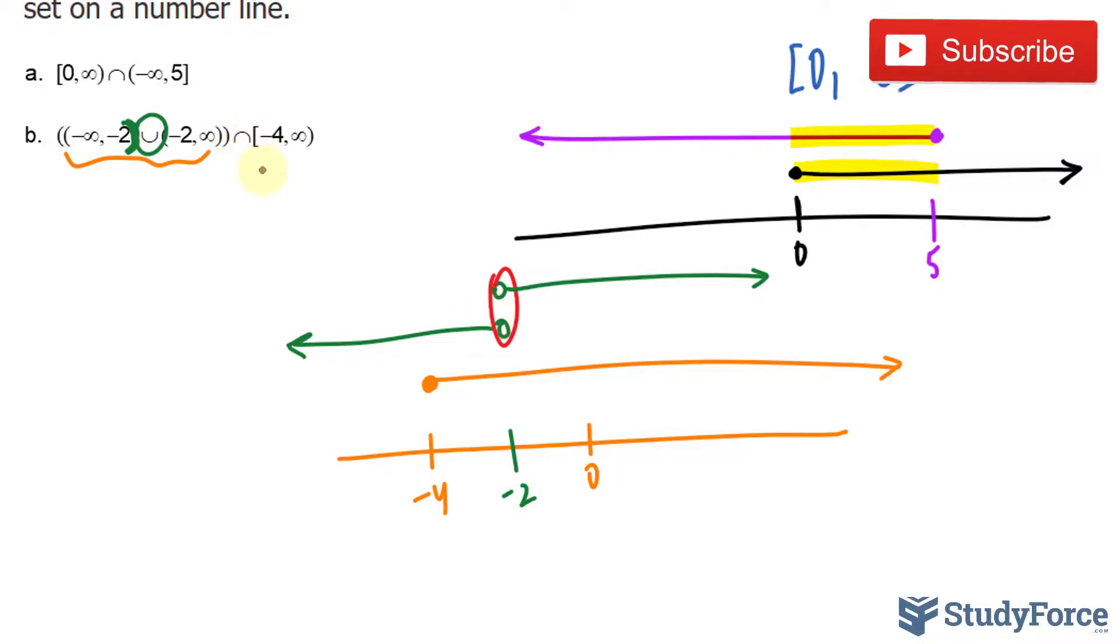And because they want the intersection with the orange line, we have to see where they are in common. So they are in common from negative four and including four here and here and beyond.